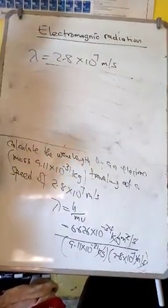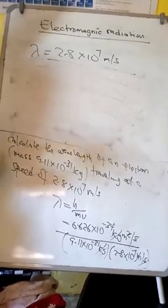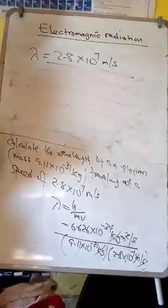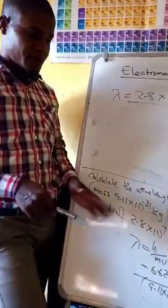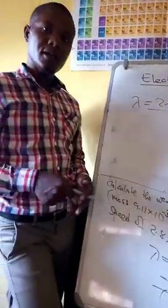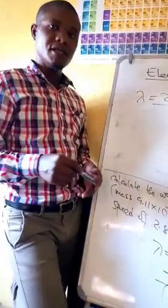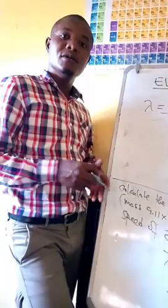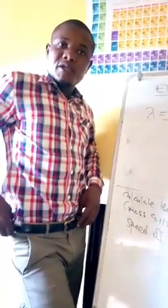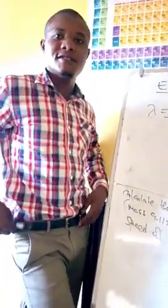This equation will help us calculate the wavelength of a particle. This is De Broglie's equation. So always remember to express Planck's constant in kg meter squared per second. Then our next tutorial will be on the emission spectrum of hydrogen atom. Thank you.